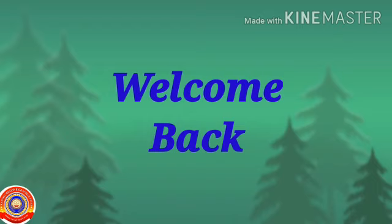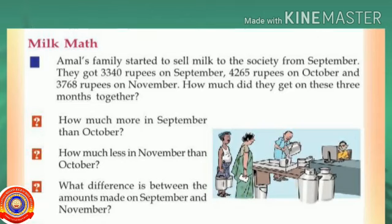Hello my dears, welcome back. We are continuing the fourth unit. Today's first activity: Amal's family started to sell milk to the society from September. They got 3340 rupees in September, 4265 rupees in October, and 3768 rupees in November. How much did they get in these three months together?